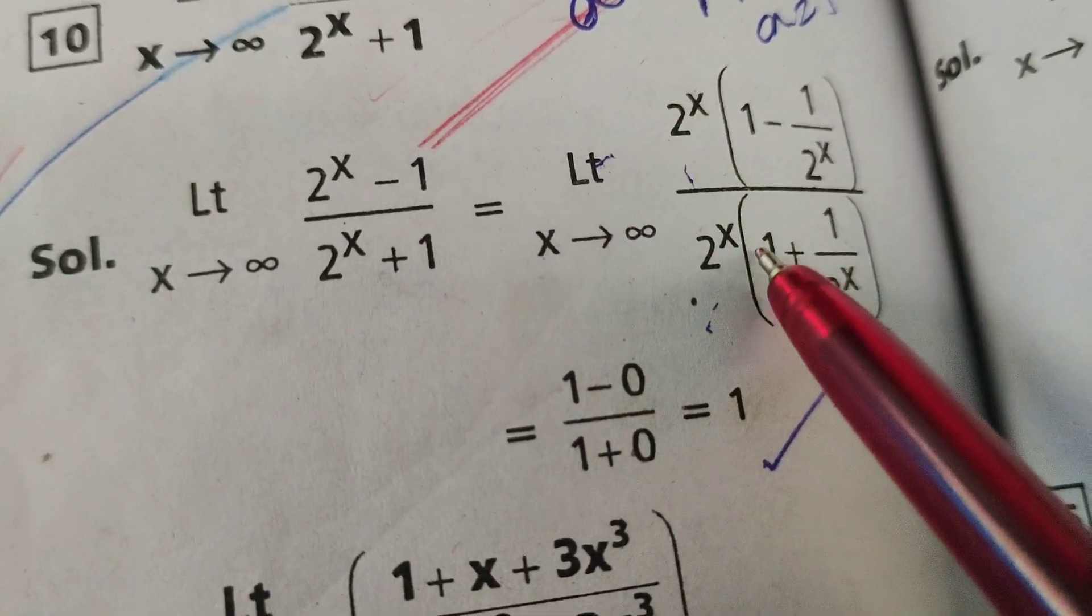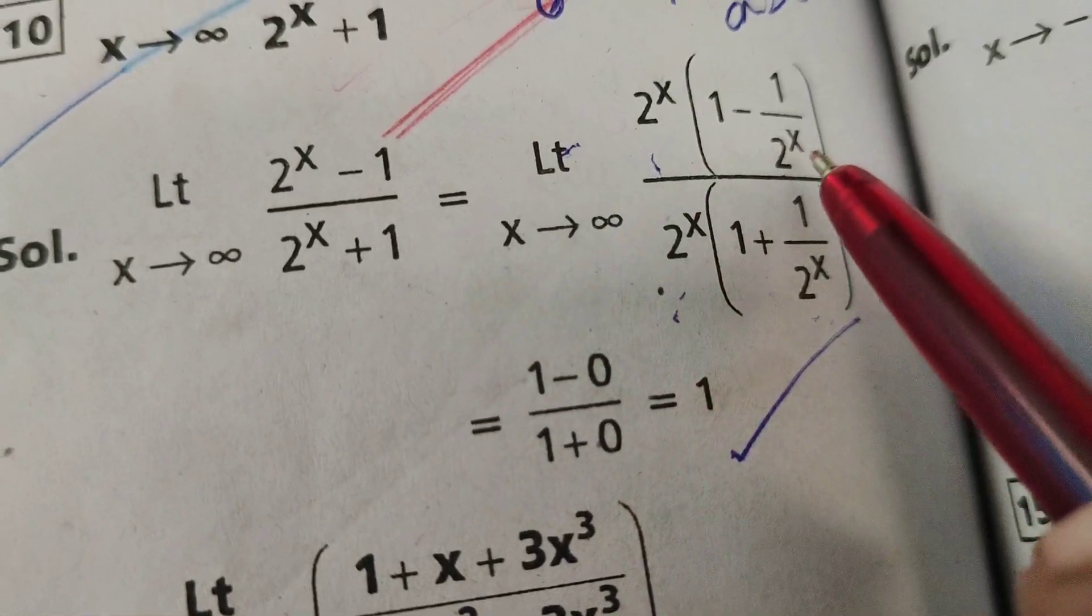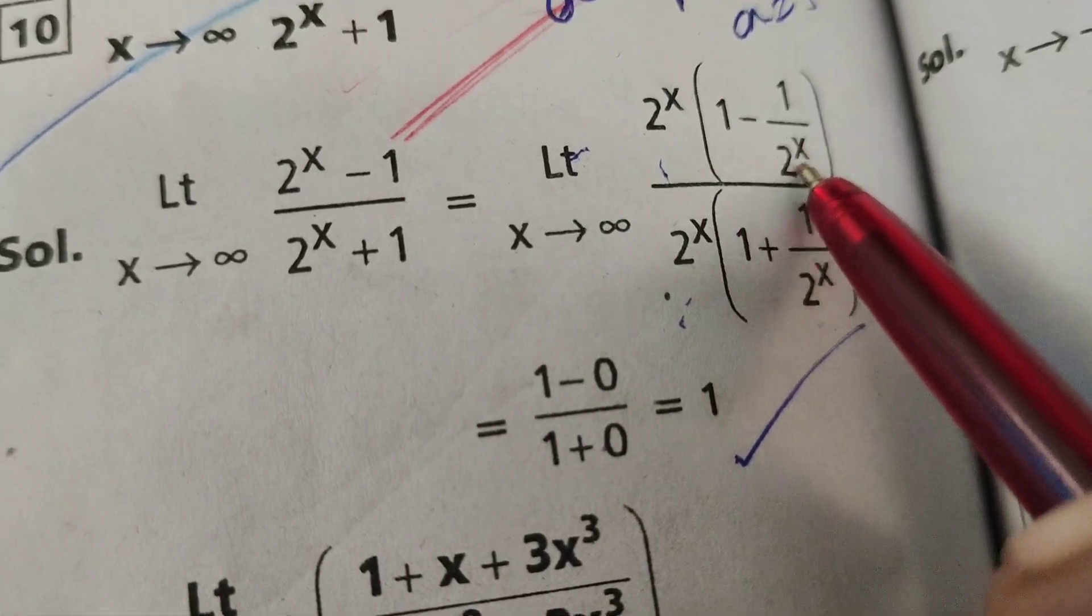2 power x gets cancelled. Now, applying the limit in place of x, 2 power infinity.